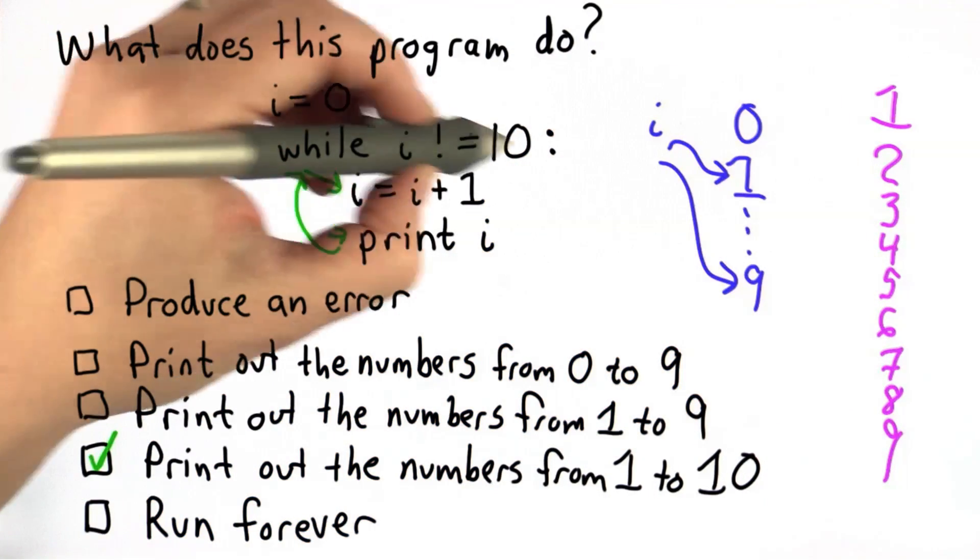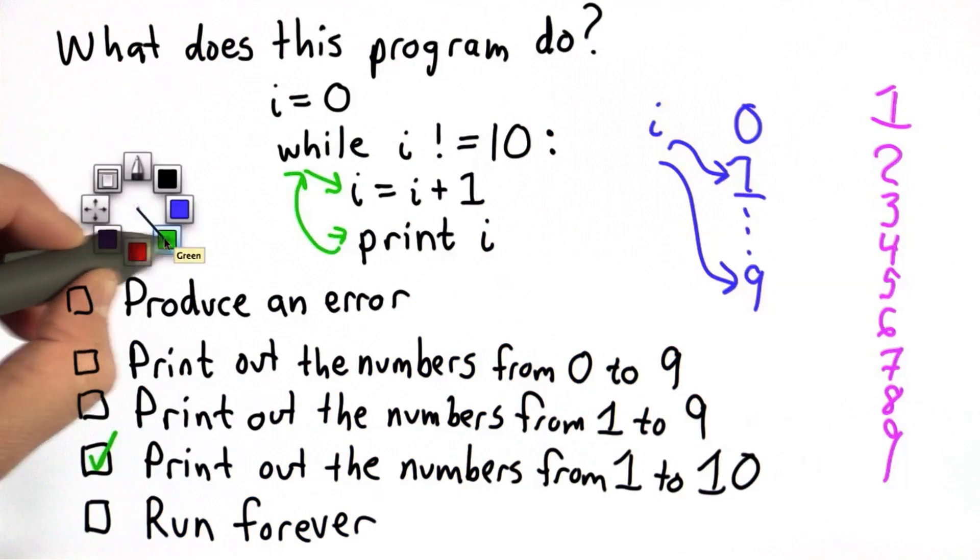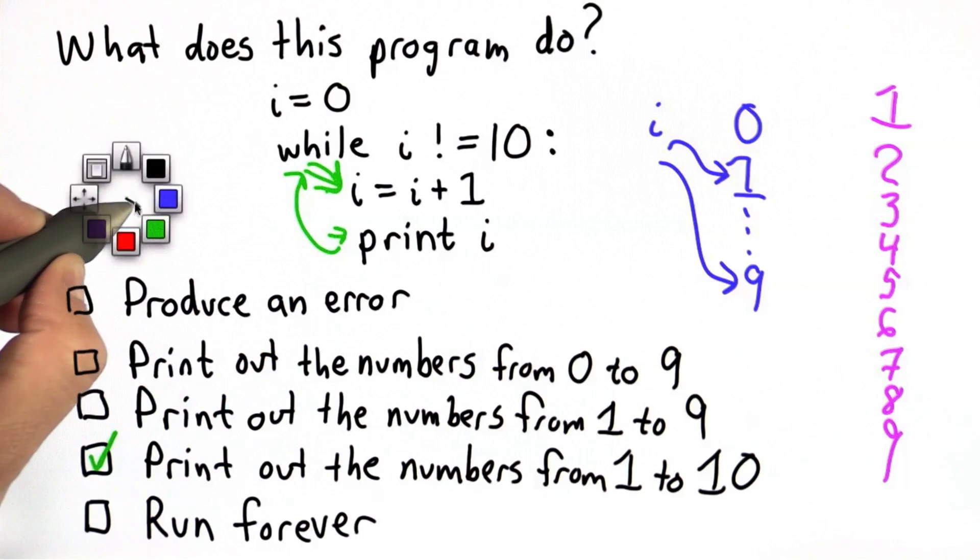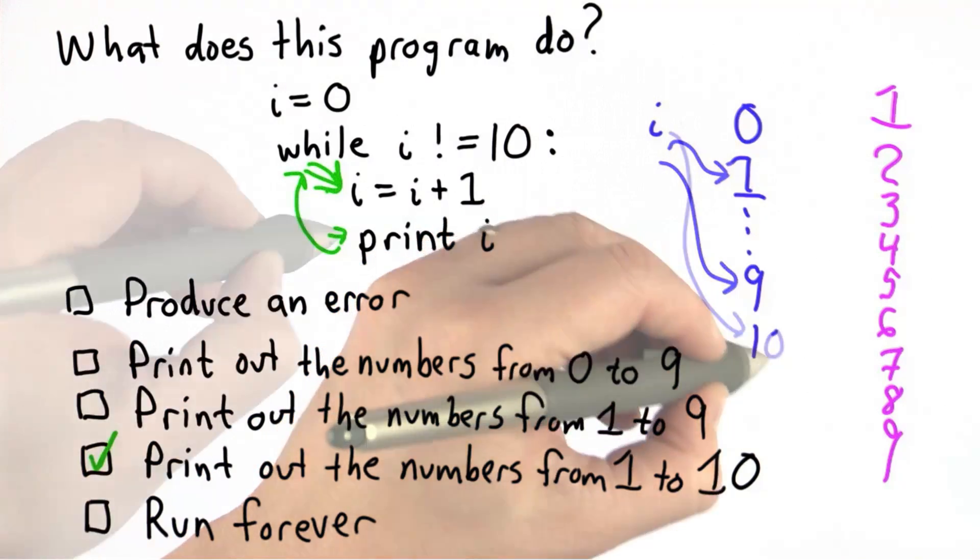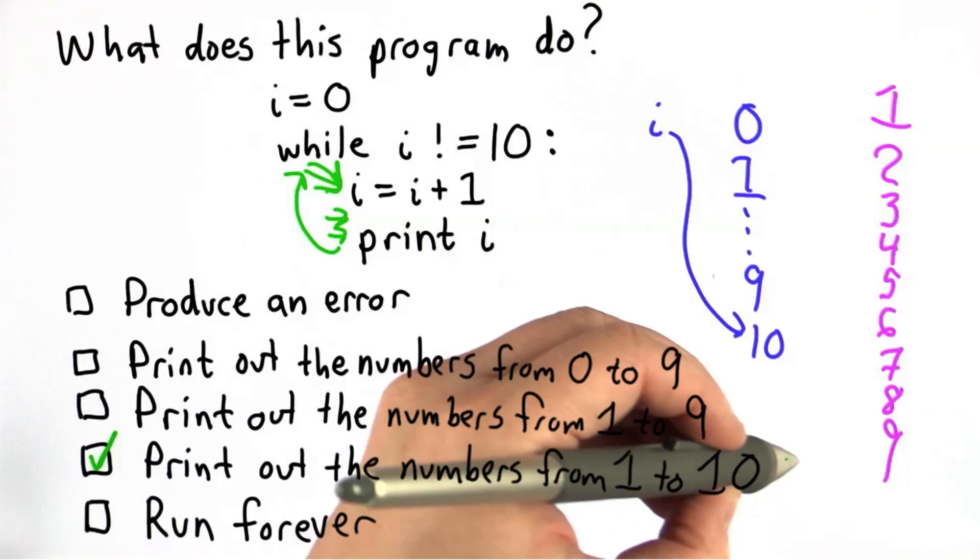At this point, i is still not equal to 10, so we still go through the loop body. Now we add 1 to i. That will make the value of i 10. Then we do the print, so that will print out 10.